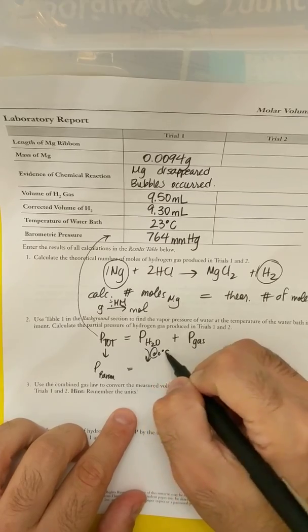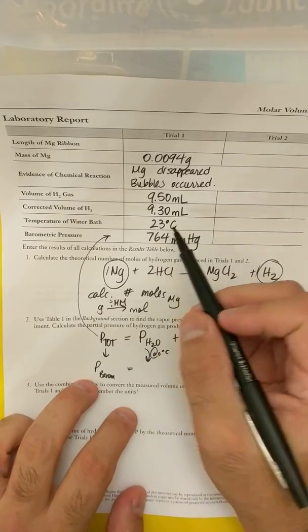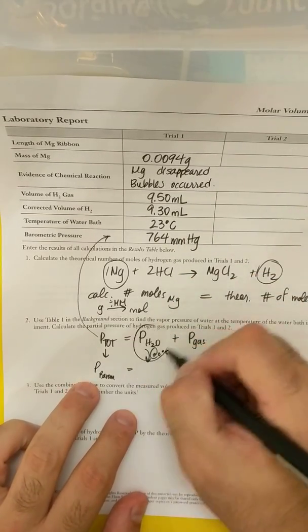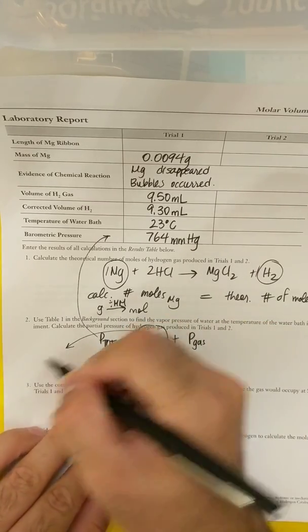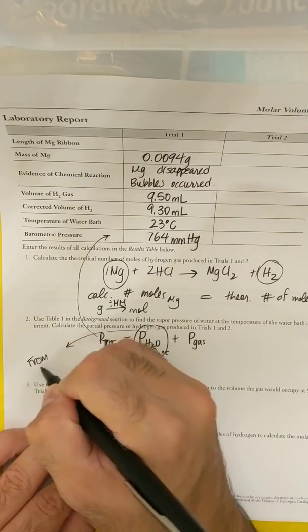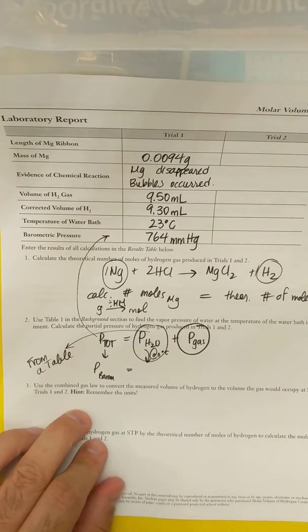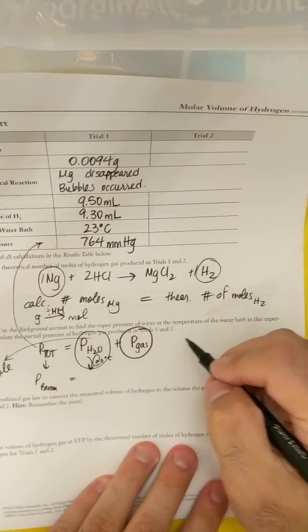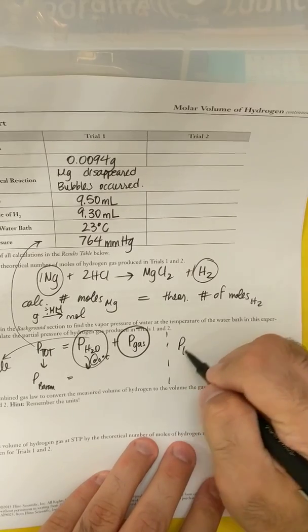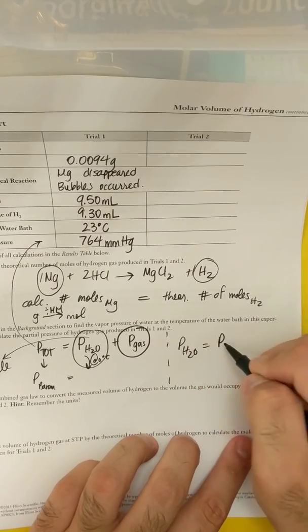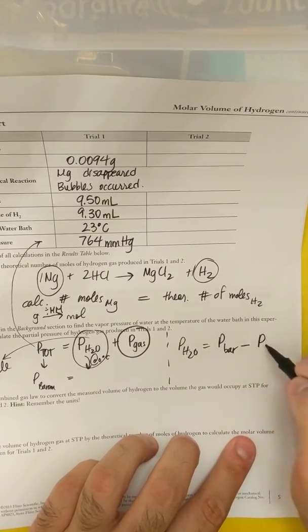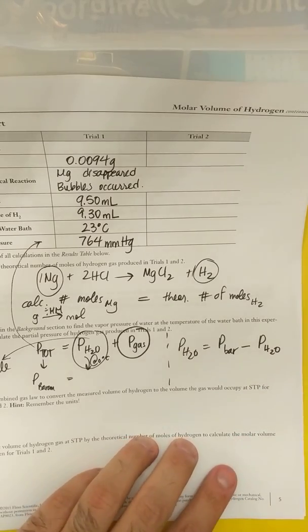So you're going to plug that in. Maybe yours would be at zero degrees Celsius. Mine would be at 23 degrees Celsius, whatever that is. So you get the partial pressure of H2O from a table. And then you have to solve for P of the gas, which is P of H2. So really P of H2 is going to be P of the barometric minus P of H2O.